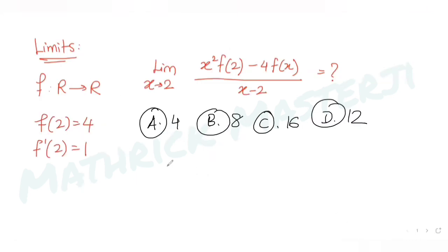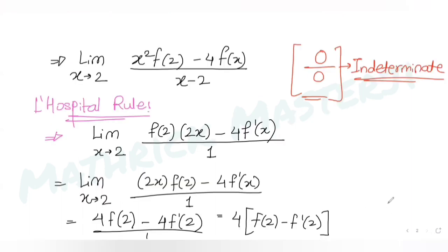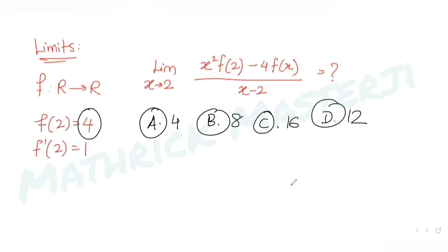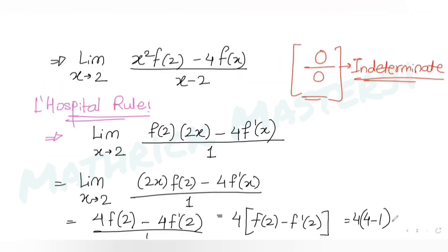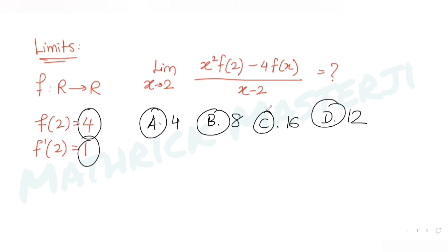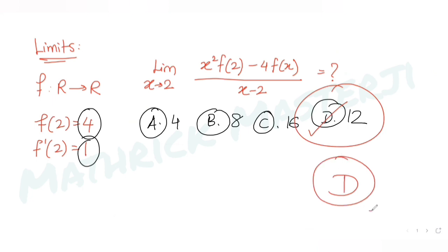Substituting x = 2 gives 4 f(2) − 4 f'(2) = 4(4) − 4(1) = 4 × (4 − 1) = 4 × 3 = 12. The answer is 12, which matches option D.